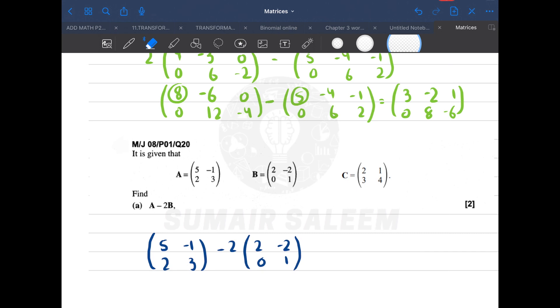Right method is: 5, -1, 2, 3. Let minus be in the middle. Multiply 2. 2 times 2 is 4, 2 times -2 is -4, 2 times 0 is 0, 2 times 1 is 2. Now let's subtract. 5 minus 4 is 1, -1 plus 4 is 3, 2 minus 0 is 2, 3 minus 2 is 1. Did you get till this point, guys?